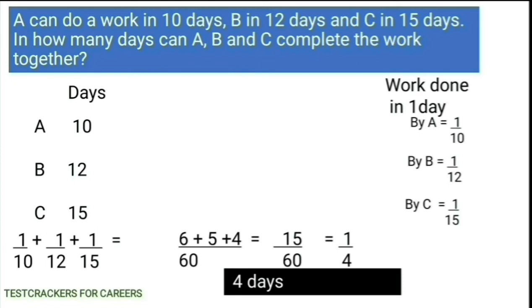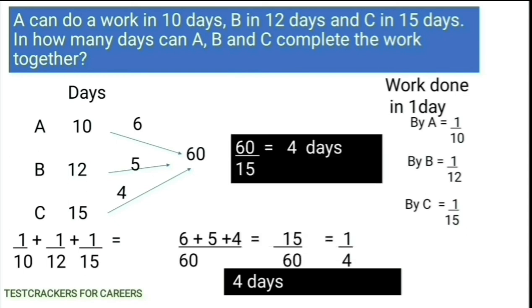Let's find out by taking the LCM of 10, 12 and 15, which is 60. So 60 units of work has to be done by A, B and C. In 1 day, A can do 6 units of work, B 5 units and C 4 units. Totally they can do 15 units of work in a day. They have to complete 60 units of work, so they will take 4 days to complete the work — that is, 60 divided by 15 gives 4 days.